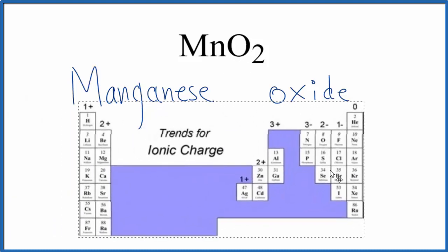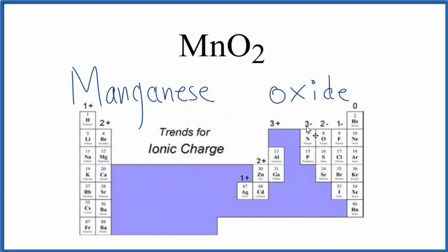So on the periodic table, we're looking for oxygen, which is right here, 2 minus. So that means each oxygen has a 2 minus ionic charge.